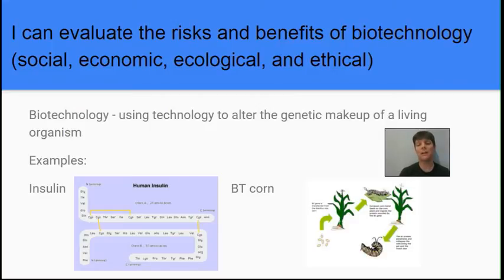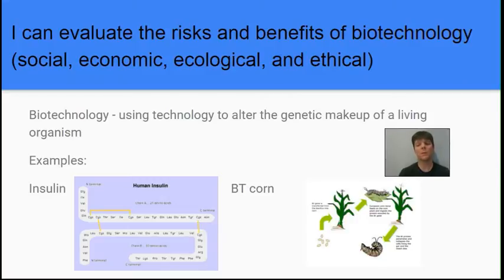Another example of biotechnology is BT corn — corn which contains a gene from a bacterium. This bacterial gene allows the corn to produce a toxin which is deadly to an insect pest that would normally cause a lot of problems for the corn. Now the corn has this toxin, it kills the insect pest, and the corn is much more resistant to damage. There is a benefit to the farmer, and potentially a social benefit because farmers would not need to use as many pesticides. However, there is a potential negative ecological impact, as other insect species are going to be negatively impacted by a corn that produces a toxin deadly to insects.